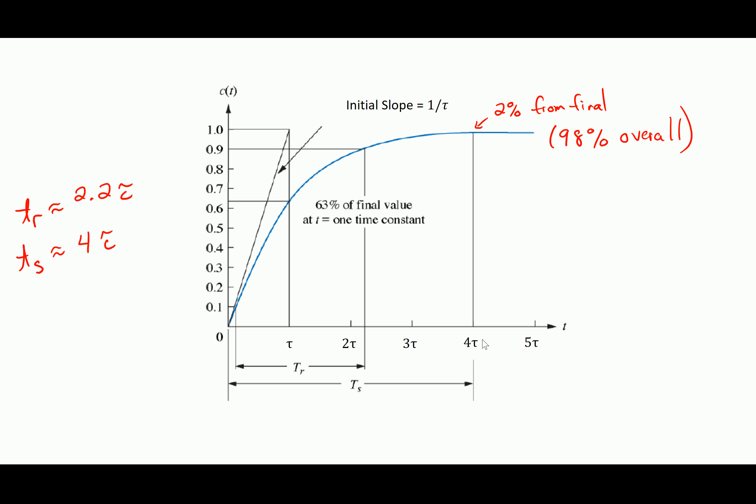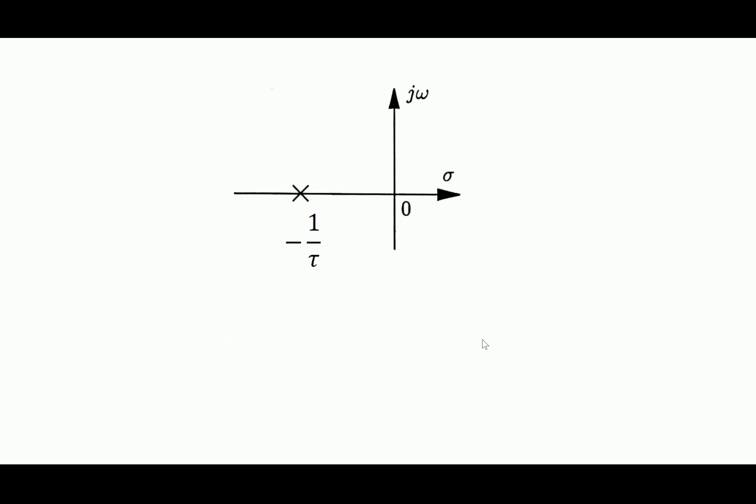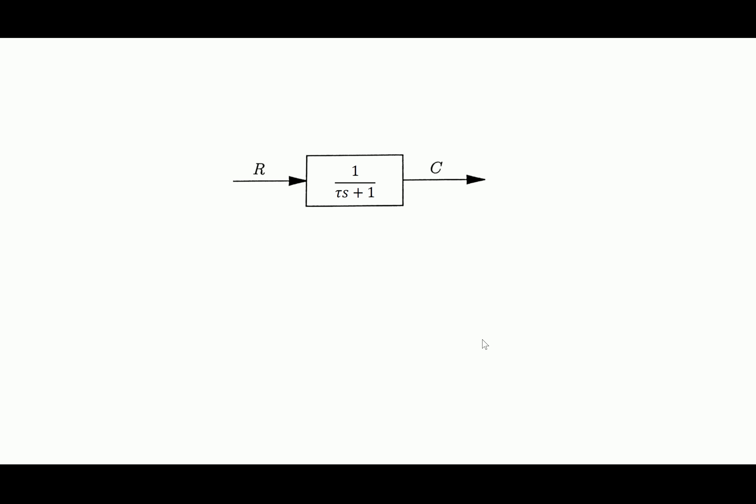In the lecture notes I talk a little bit more about the ramp response — basically, if my input was a ramp, what does the output look like? I'm not going to talk about that here; we'll talk about it later in the semester. What I want to do before I end is go back to 1 over tau*S plus 1, our basic guy.